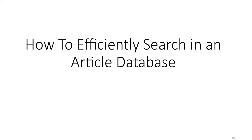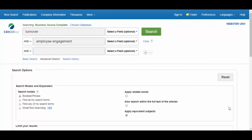Let's look at how to efficiently search in an article database. We are going to search Business Source Complete for our topic: Does Employee Engagement Affect Turnover? And what role does a supervisor play in the equation?